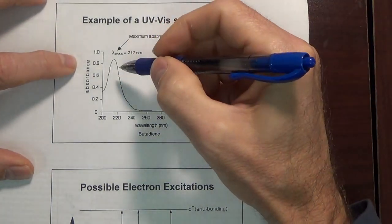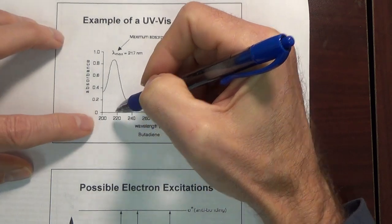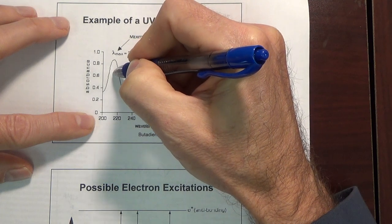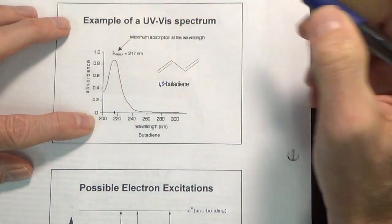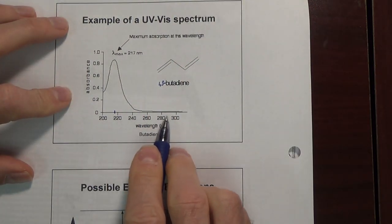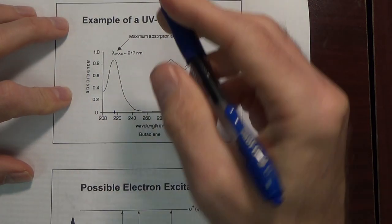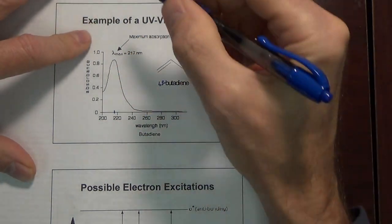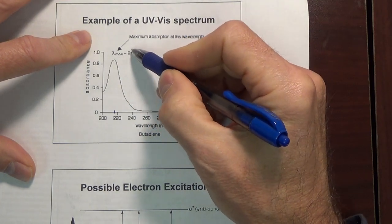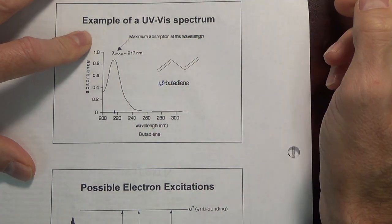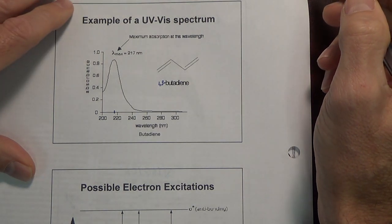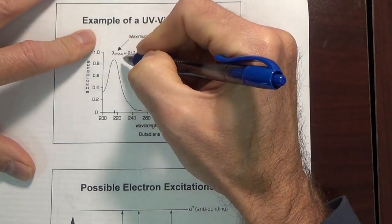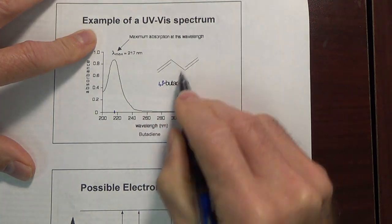For butadiene, the wavelength of maximum absorbance is at about here — it's known to be 217 nanometers. The wavelength of maximum absorbance is called the lambda max. With lambda being wavelength, the lambda max is 217 nanometers for 1,3-butadiene.